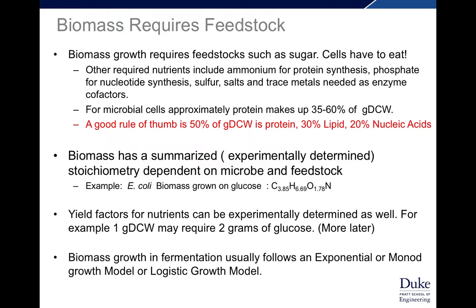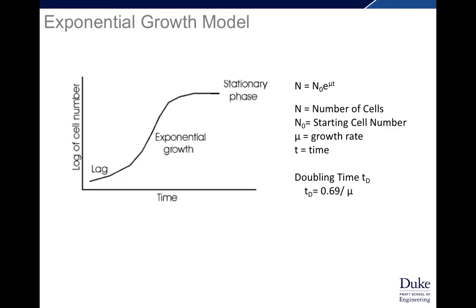Biomass growth in fermentation — and in any culture system — usually follows an exponential or Monod growth model, or a logistic model, which we will tend to use later in the course. The exponential growth model is pretty simple: cells start at one number, have a lag period adjusting to new media conditions, then start to double — one cell becomes two, two cells becomes four — that's the exponential phase. When they begin to consume most nutrients with a limiting nutrient or condition, they settle into stationary phase. Exponential growth can be modeled as N = N₀·e^(μt), where μ is the growth rate and t is time. Doubling time is 0.69 divided by μ. Non-exponential growth such as stationary phase is caused by limitation in one or more required nutrients, which could include oxygen.